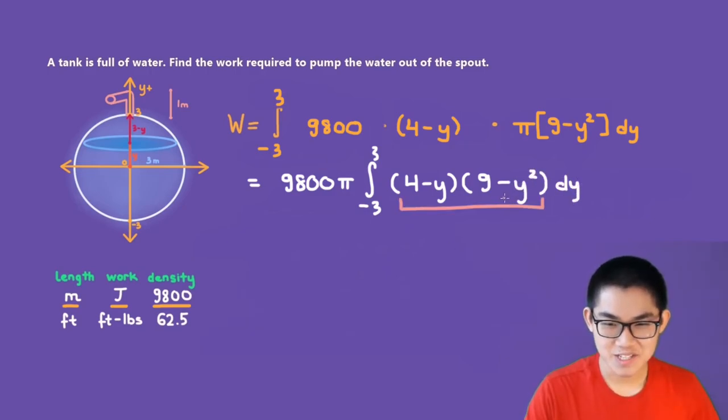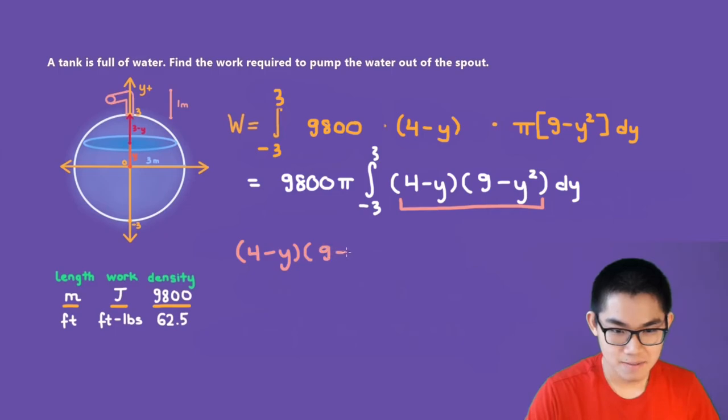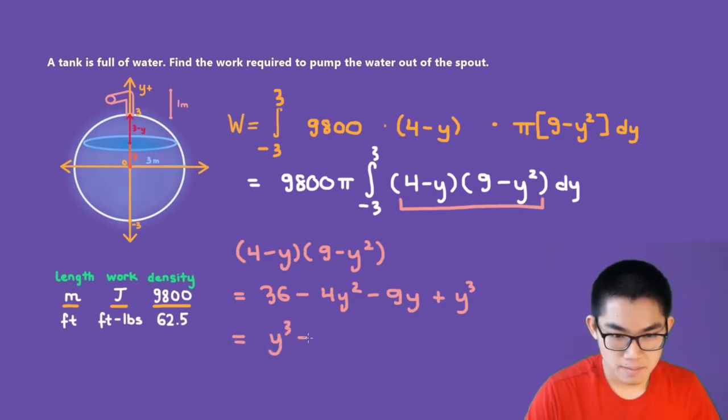What is this going to be? We have four minus Y times nine minus Y to the power of two. We can also rewrite this as Y to the power of three minus four times Y to the power of two minus nine Y plus 36.